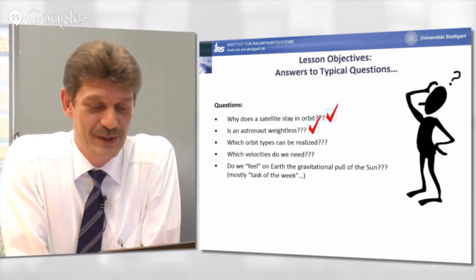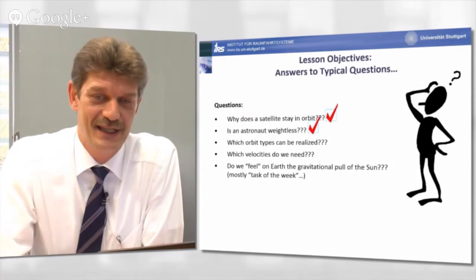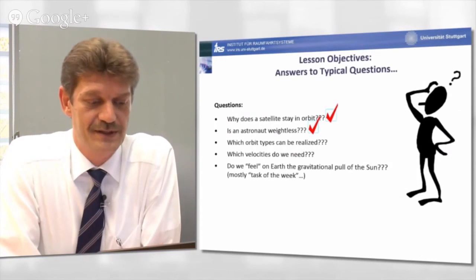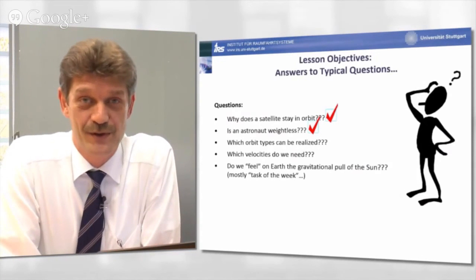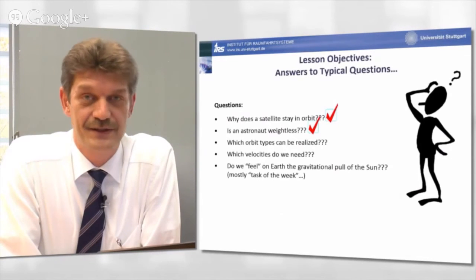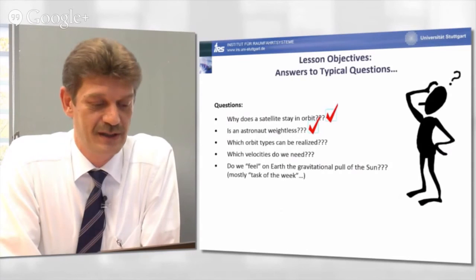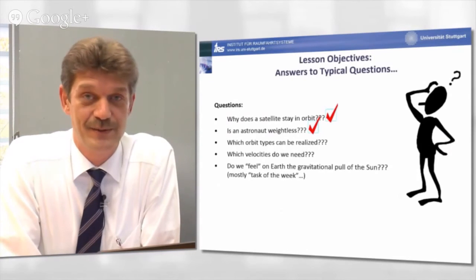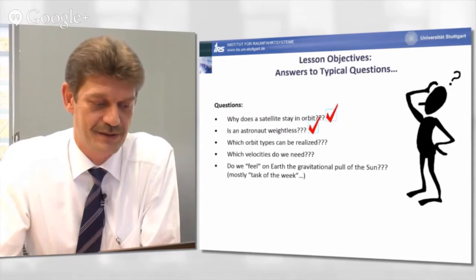Now we have also the answer which orbit types can be realized, namely elliptical orbits, in most cases for a closed orbit around the central mass. We can also establish parabolic or hyperbolic orbits if we want to escape from this central mass.